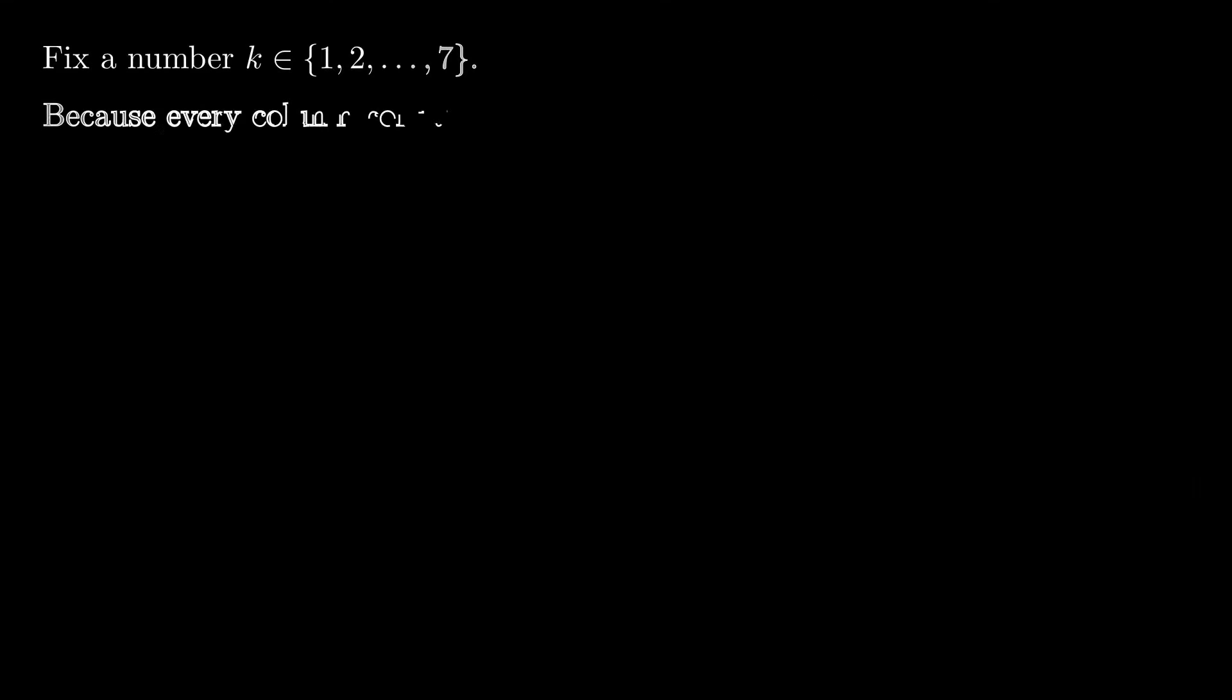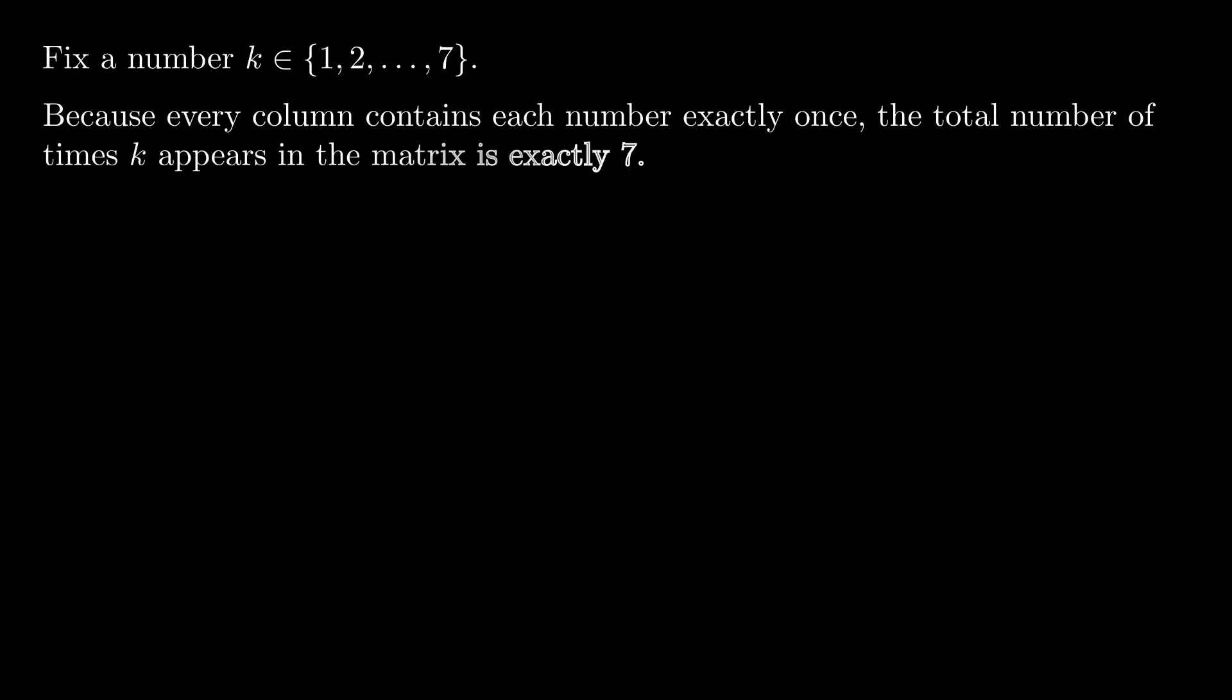Fix a number k between 1 and 7. Because every column contains every number exactly once, the total number of times k appears in the matrix is exactly 7. Now observe that if k appears outside the main diagonal, it must occur in pairs, as each occurrence must have a corresponding counterpart symmetric to the diagonal. So every occurrence of k off the main diagonal must appear in pairs.